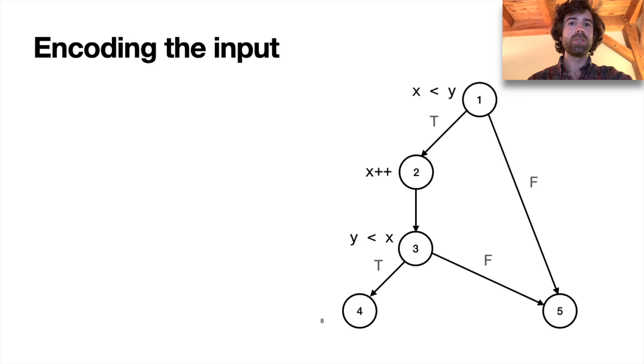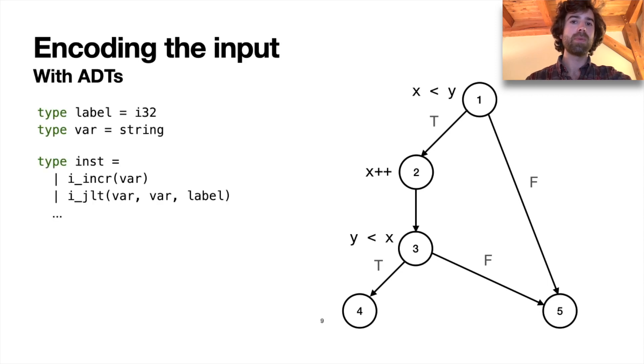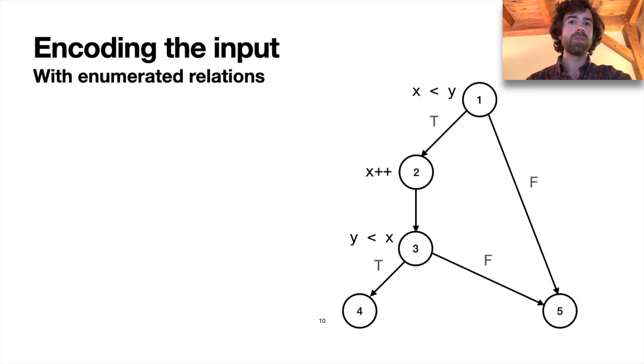The first thing we need to do is to actually encode this control flow graph in Formulog. We'll do that partly through algebraic data types. Here we define the type of an instruction of our input language.